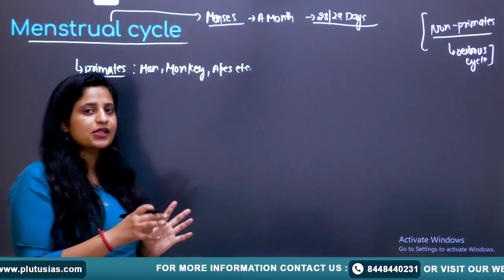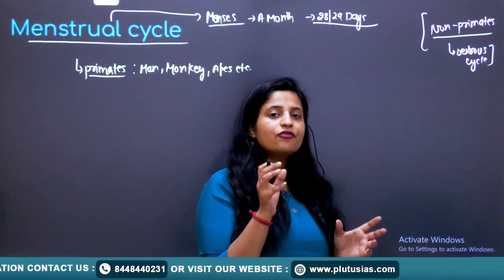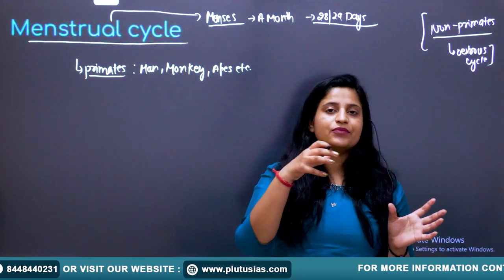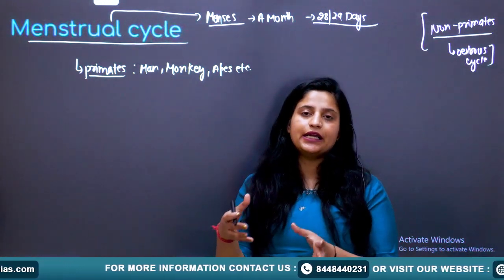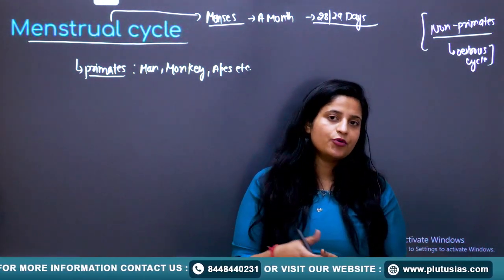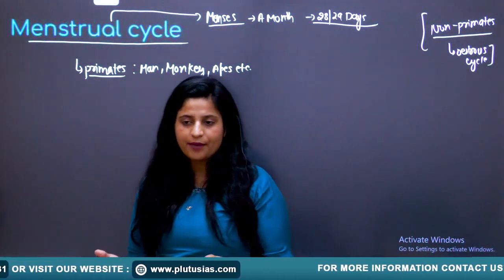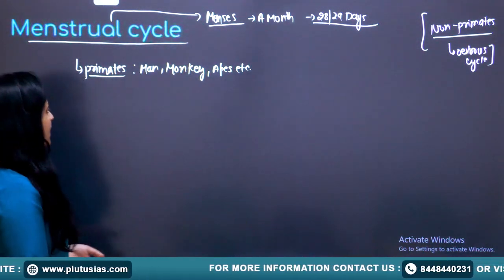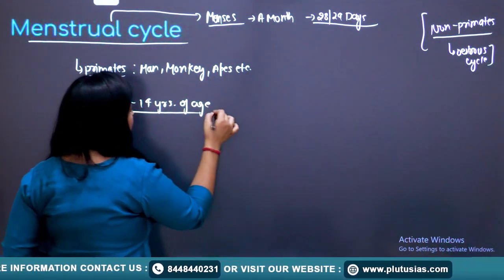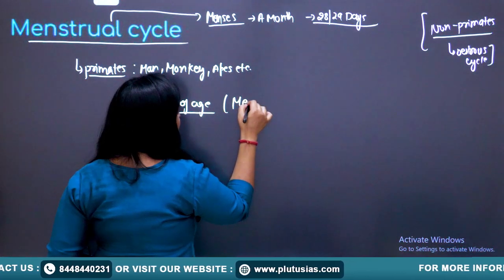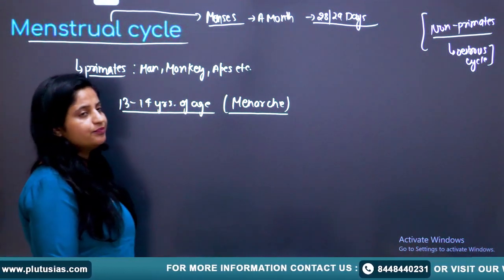The menstrual cycle starts in a female when she attains puberty — around the age of 13 to 14 years. Commonly we call these 'periods.' Around 13 to 14 years of age, a female has her first menstrual cycle, and this phase is known as menarche.